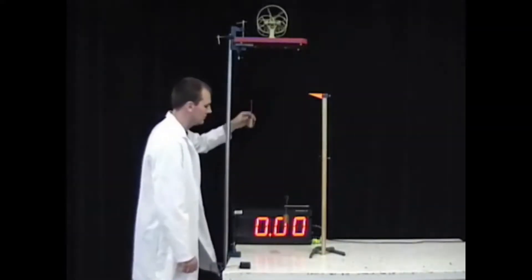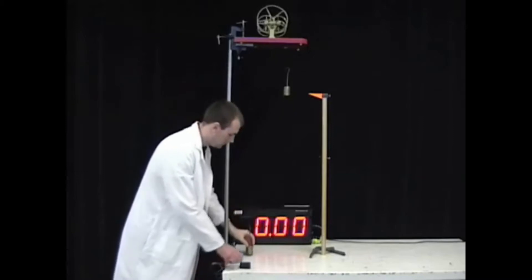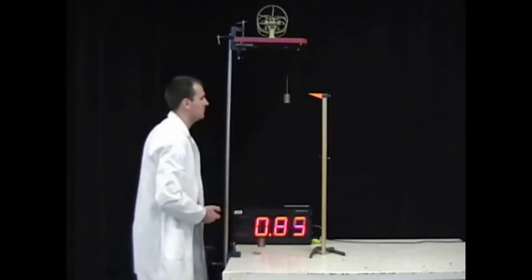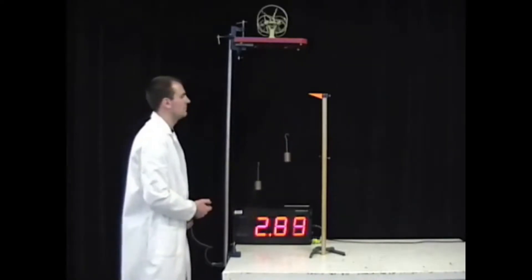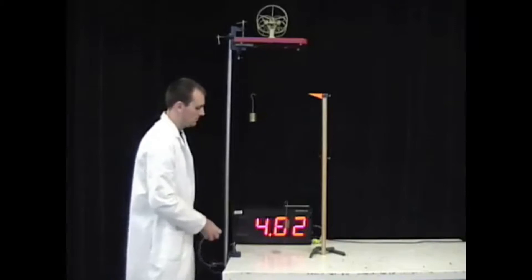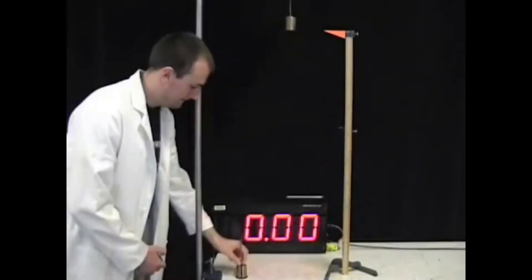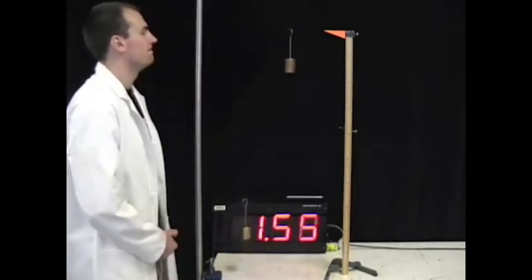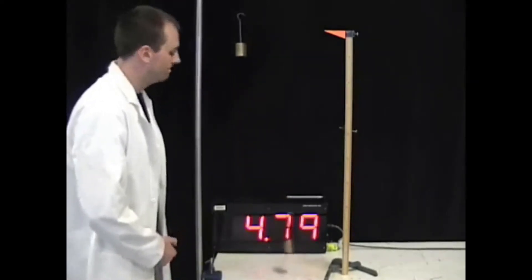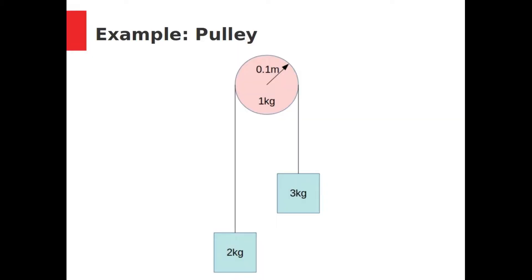We have done pulley puzzles before, but we have always assumed the pulley wheel to be very light. We have ignored its moment of inertia. We have also made the related assumption that the tension is uniform throughout the string. Now we will revisit the pulley, but this time we will account for a heavy wheel, which means we must account for its rotational inertia. We will also assume the tensions are not equal.